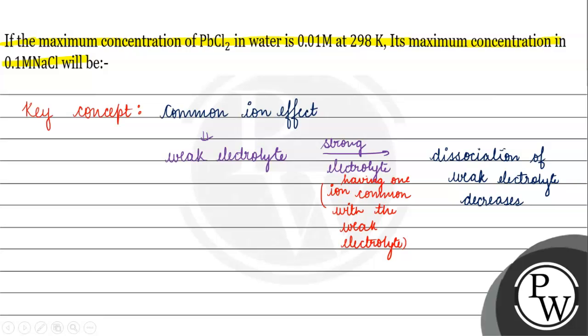We have PbCl2 which is a weak electrolyte. We have the chloride ion as the common ion, and this causes a decrease in dissociation of PbCl2.